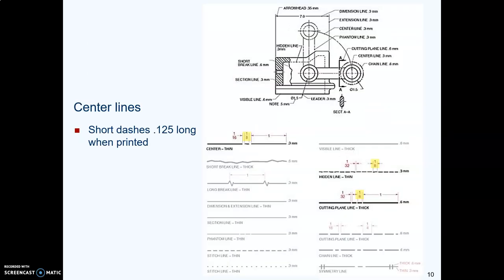The short dashes in a center line should be an eighth of an inch long when printed. You'll notice that that's the same with hidden lines and cutting plane lines. So you'll see this number, an eighth of an inch, showing up all over the place. Our text is an eighth of an inch high, our arrowheads are an eighth of an inch long, and our dashes are an eighth of an inch long.